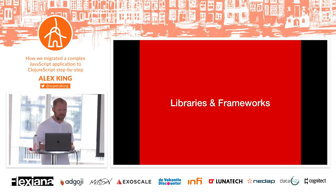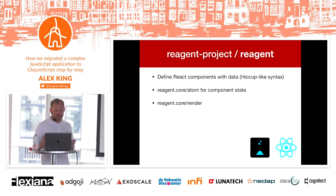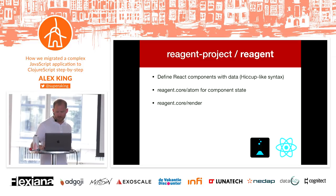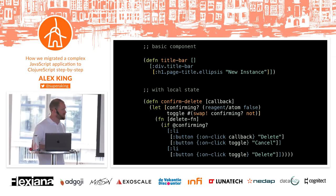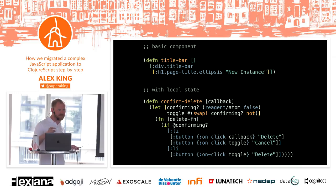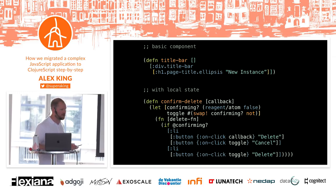Now some of the libraries we used, starting with Reagent. Essentially it wraps React, gives us a nice hiccup-like syntax, and provides good options for local state which is really useful for building small components. The most basic component is just a div with a heading tag. A more complex example is a delete button that when clicked shows a confirm or cancel option, using local state to determine which mode we're in. We pass a callback for the actual action — a simple reusable component in Reagent.